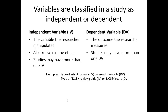Here's another example: the type of NCLEX review guide on NCLEX scores of test takers. The type of guide or study resource would be the independent variable, and the score is the dependent variable.